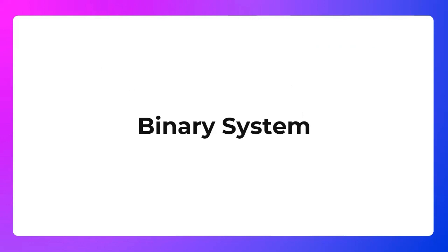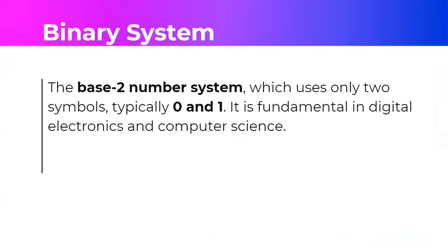Now let's talk about the remaining number systems. Let's start with the binary system. Binary is the base 2 number system, which uses only two symbols — 0s and 1s. It is fundamental in digital electronics and computer science. We're already well aware and familiar with base 2, which we typically use on truth tables and so on.